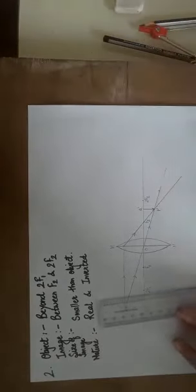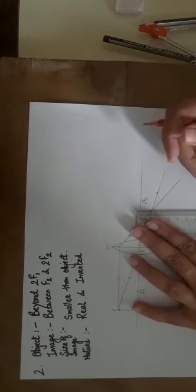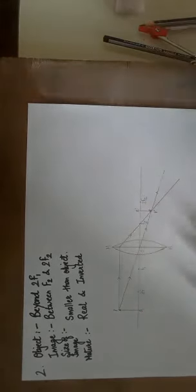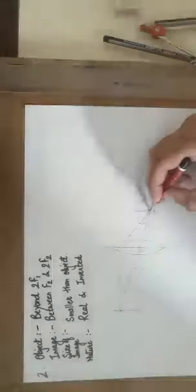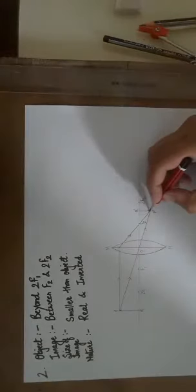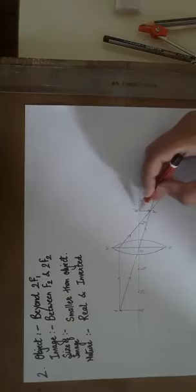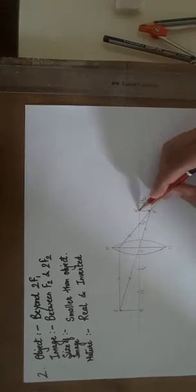This is how the image is obtained. If you see, measure it with a scale, it should be less than the size of the object. We have taken an object of 2 centimeters. This is somewhat 1 centimeter. So I have got a smaller than object image over here. It is inverted. Point Q is on the principal axis here, so here it will be Q' and P' will come over here.